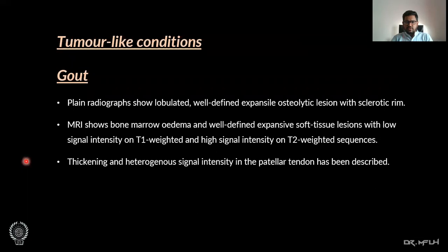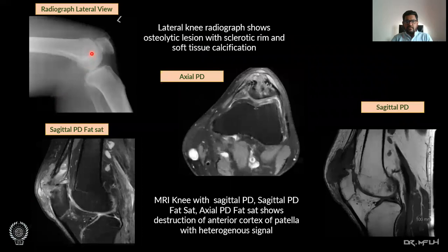Tumour-like conditions include gout. Plain radiograph shows a lobulated, well-defined expansive osteolytic lesion with a sclerotic rim. MRI shows bone marrow edema and a well-defined expansive soft tissue lesion with low signal intensity on T1-weighted and high signal intensity on T2-weighted sequences. Thickening and heterogeneous signal intensity in the patella tendon has been described. Here we can see a lateral knee radiograph showing an osteolytic lesion with sclerotic rim and soft tissue calcification.